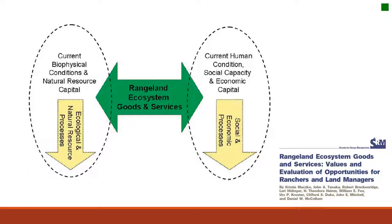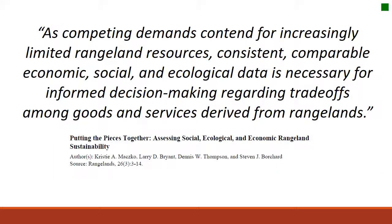Rangeland ecosystem goods and services provide a linkage between the social and economic aspects on rangelands with the ecological and natural resource processes. Together the goods and services combine these aspects, and when we think about rangeland management we know we have to consider all three components to meet the needs of society. We can use social, economic, and ecological information to make informed decisions, but we have to understand the trade-offs between these different information sources concerning goods and services for particular areas.